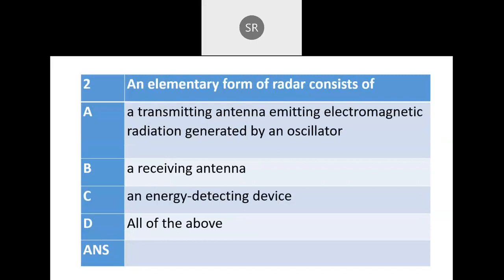Second question: An elementary form of radar consists of a transmitting antenna emitting electromagnetic radiation generated by an oscillator, a receiving antenna, an energy detecting device, or all of the above. Please type your answer in the chat. The correct answer is D — all of the above.